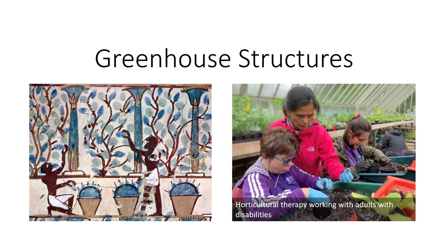During the winter months, the early Egyptian and Roman civilizations used greenhouse structures to protect tender crops such as fruits and vegetables. Today, greenhouses are not limited to just food production, but are also used in the ornamentals industry.